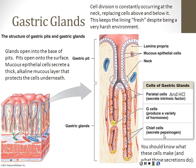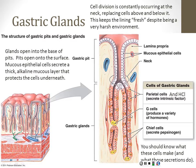Pepsinogen — this inactivated form — is another way the digestive tract keeps from digesting itself. If pepsin were released intact in its active form, it would digest the cells that made it, because cells are made of proteins. To prevent autodigestion, many digestive tract enzymes are released in an inactive form and then activated when they get to where they're going to do their job. The acid in the stomach turns pepsinogen into pepsin, and then pepsin breaks down proteins.